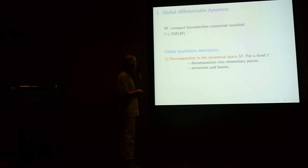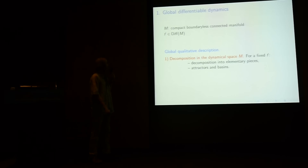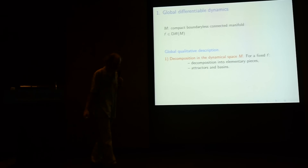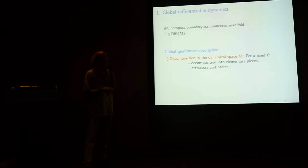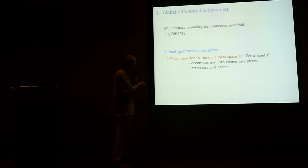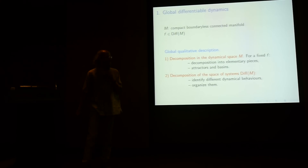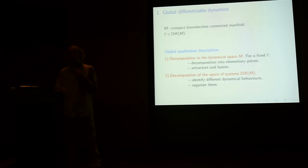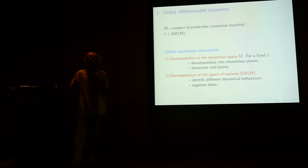Let me first start by saying what we mean by global dynamics — a global quantitative description of the dynamics. We are on a compact connected manifold and we study its diffeomorphisms. We first wonder if we can split the dynamics: fixing a diffeomorphism, we want to split the phase space — the manifold — into elementary pieces, and try to understand for each piece what points are attracted. But we also want to understand the space of systems — to identify different kinds of dynamics and see how they are organized in the whole space, and how the dynamics changes when the system is perturbed.